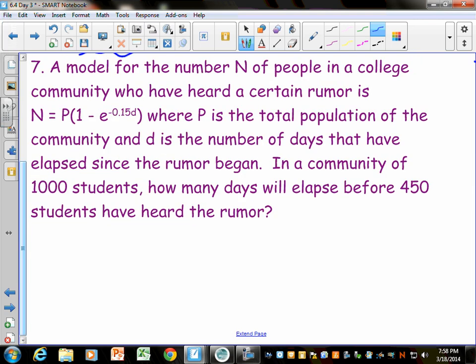It says, A model for the number n of people in a college community who have heard a certain rumor is given by n equals p times 1 minus e to the negative 0.15d, where p is the total population of the community, and d is the number of days that have elapsed since the rumor began. In a community of 1,000 students, how many days will elapse before 450 students have heard the rumor? If you want to know, this is number 124 on your homework page, which is 449.